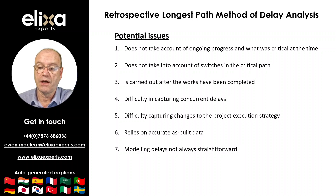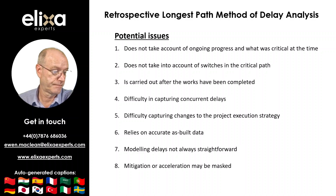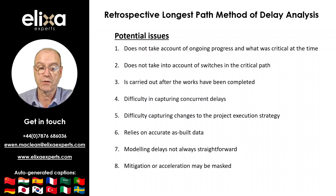This can lead to unrepresentative delays being included in the analysis, or possibly some delays either being ignored or exaggerated over others. The retrospective longest path method of delay analysis may also overlook mitigation or acceleration, which can conceal or distort the true status of the works.